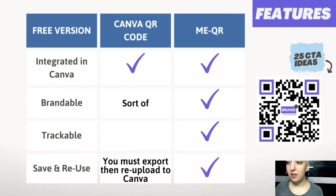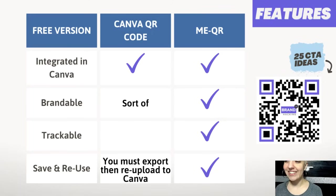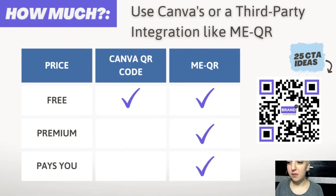Another really cool feature of MeQR is you can upload text, audio, PDFs, and image files to create a QR code, and it doesn't need to live on a live web page. Basically, when someone scans it, whatever media you uploaded will just pop up on their screen. It's a great way to send the equivalent of a video text message or a quick PDF free download. Your PDF can be branded with all your links so people can still learn about your brand — but you don't always need to land people on a website.